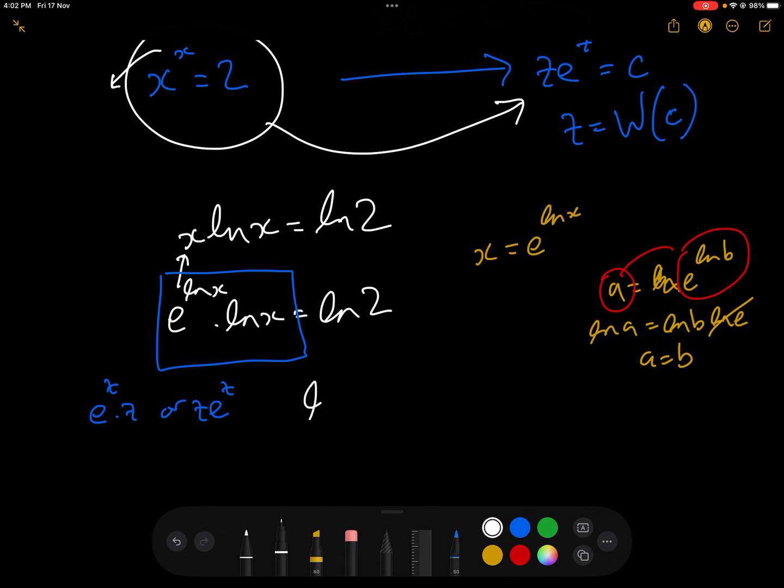So we now know that log x = W(log 2), just by basically comparing this equation to z*e^z = c.